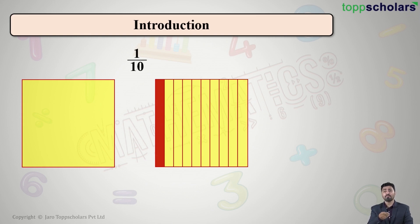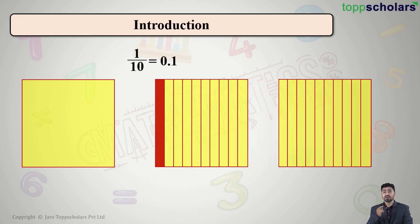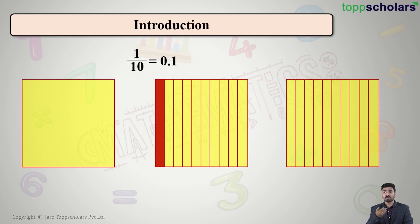And 1 out of 10, that is 1 upon 10, can be written in decimal form as 0.1. Now what we do is this square which is divided in 10 parts, I further divide in more 10 parts, but this time with horizontal lines.